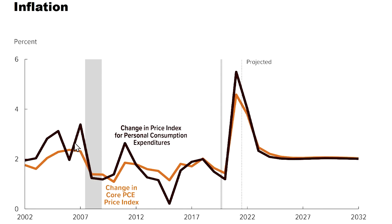We have two numbers here. One is overall and one is core inflation. The dark line is the CPI — the Chained Price Index. The orange is the core. Actually, this isn't CPI — this is PCE.